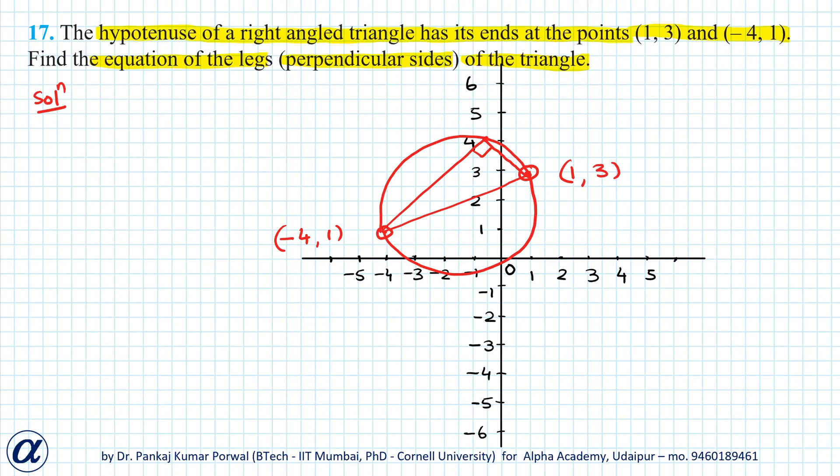The vertical leg is parallel to the y-axis and it passes through point (1,3), so its equation will be x equals 1.